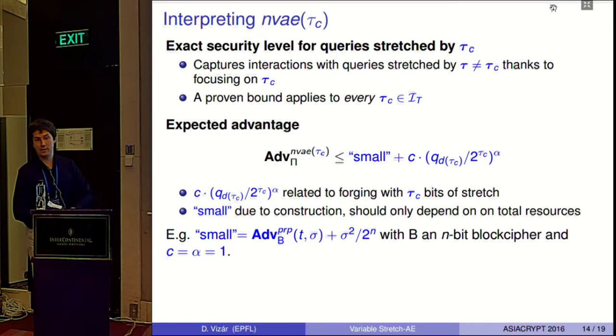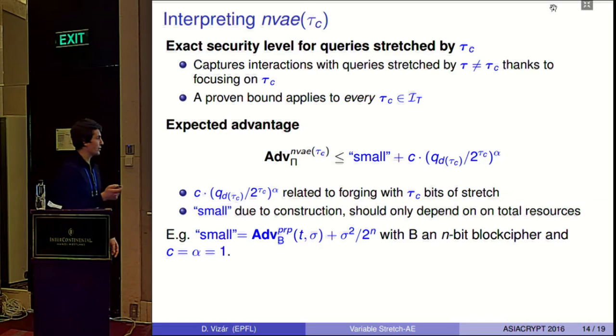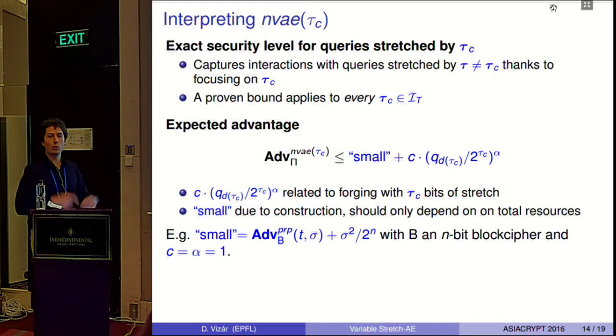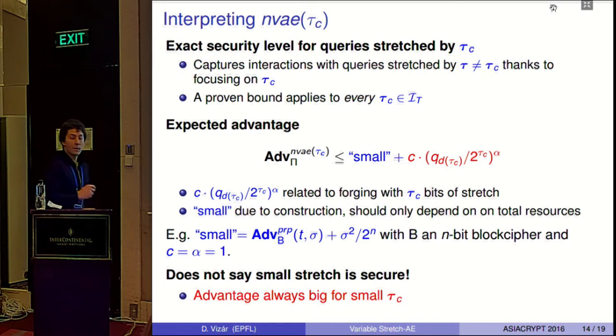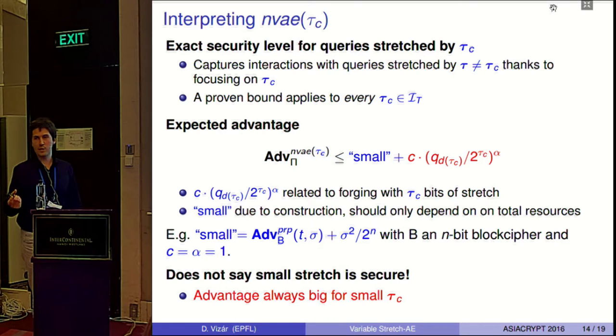How would a good advantage look like if we manage to prove something in the model? What we would like to see is an advantage which has these two main components. One component will be this term, which grows linearly or maybe quadratically with the number of decryption queries made with tau c bits of stretch. This is something that cannot be avoided, because if there are just tau c bits of redundancy, after two to tau c queries, you just guess it. But we want that it doesn't decrease much faster than this. Then there would be some other term which probably comes from the construction, but this should not depend on tau c directly or the resources related to tau c. For instance, for a typical block cipher based construction, we would see a birthday bound like this, where sigma is the total amount of data processed with all the values of stretch, because the adversary just learns about the used block cipher.